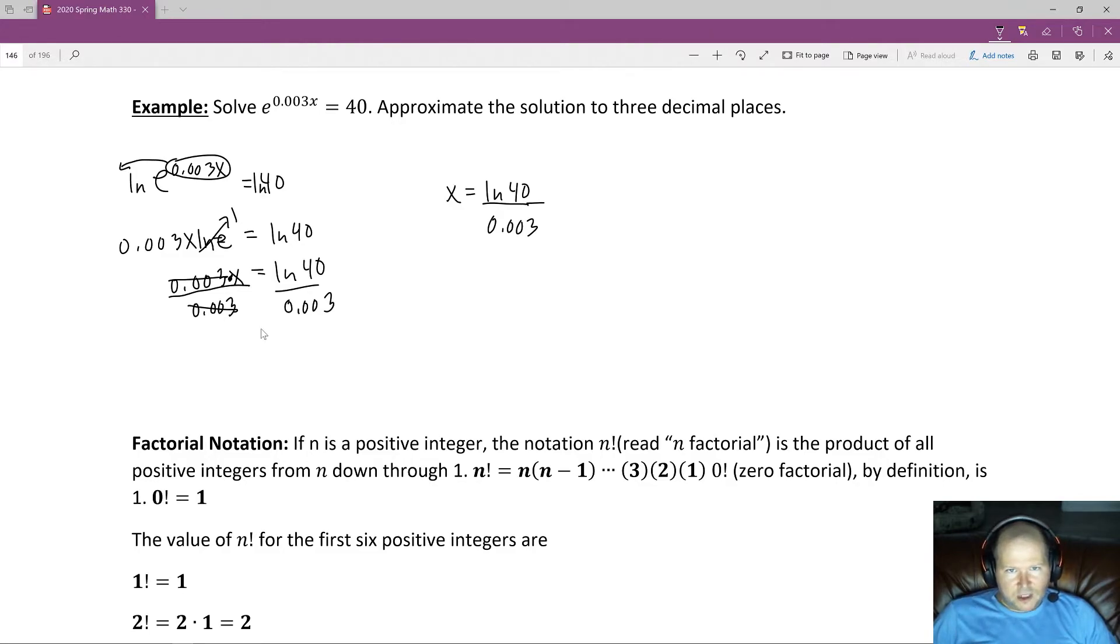And the natural log of 40 over 0.003 is equal to 1,229.6264 and so on and so forth. Now, since we are only trying to approximate the solution to three decimal places, we are interested in the third decimal place over here, which is a 6, and next to it is a 4.